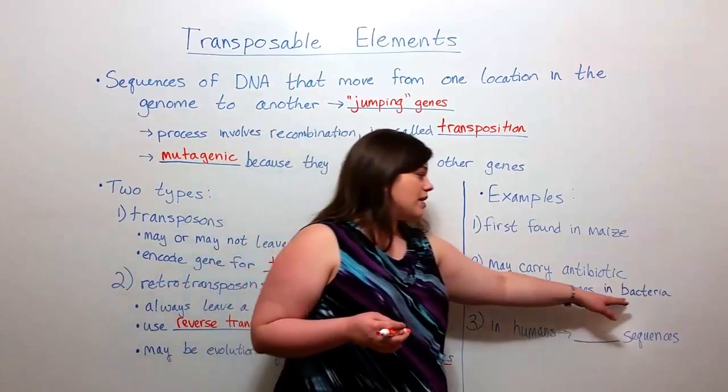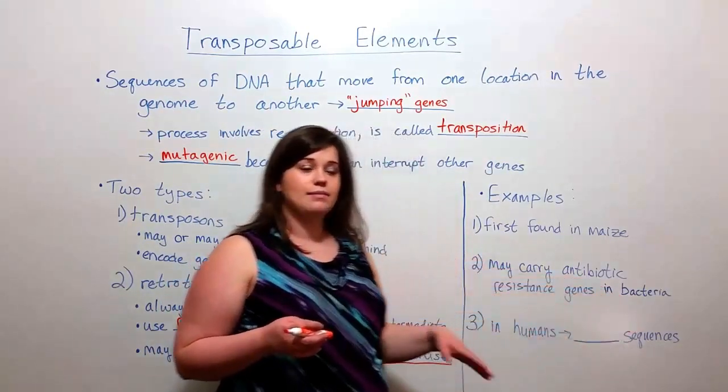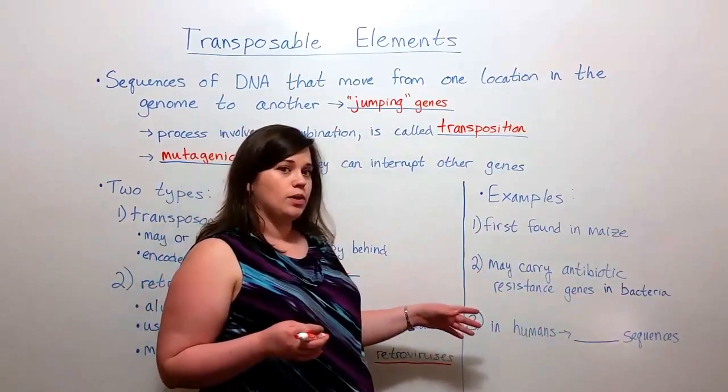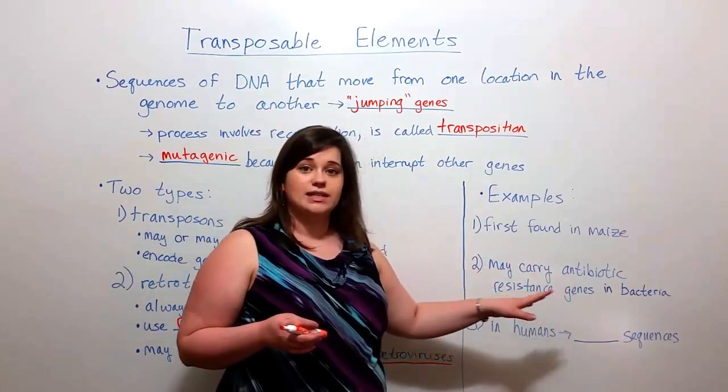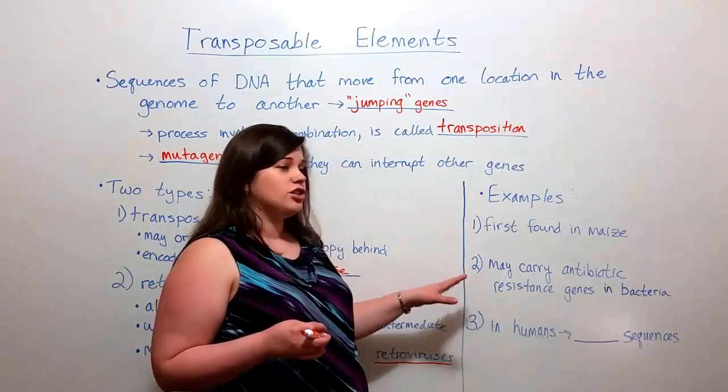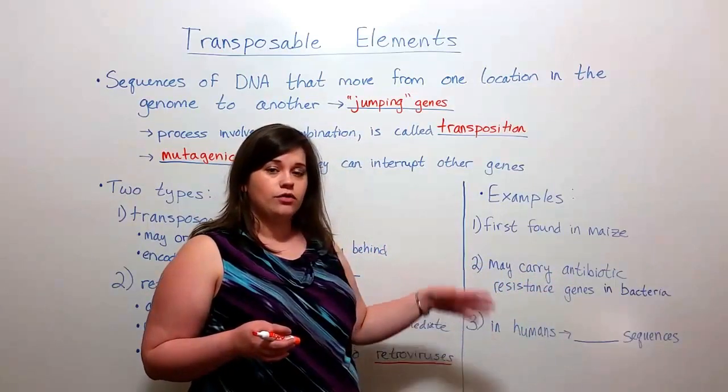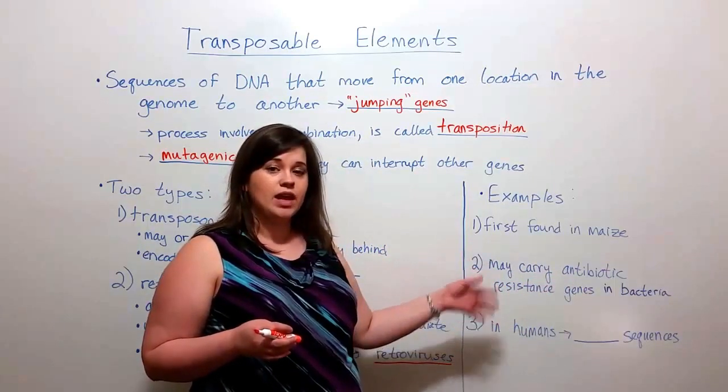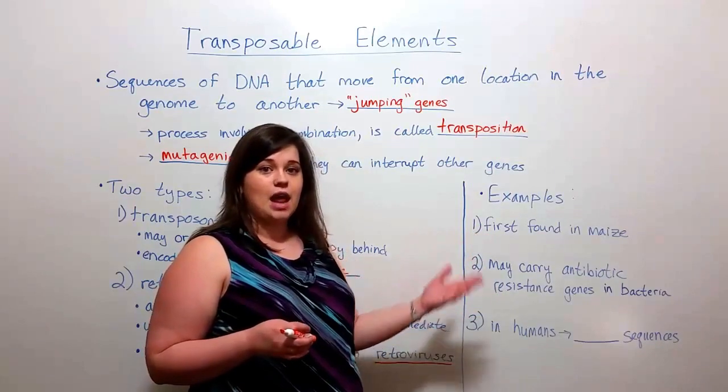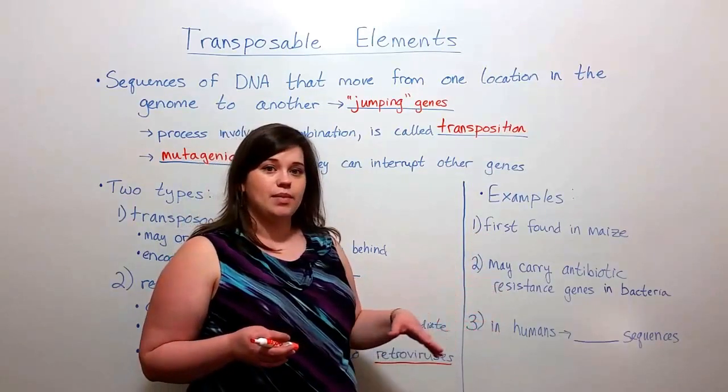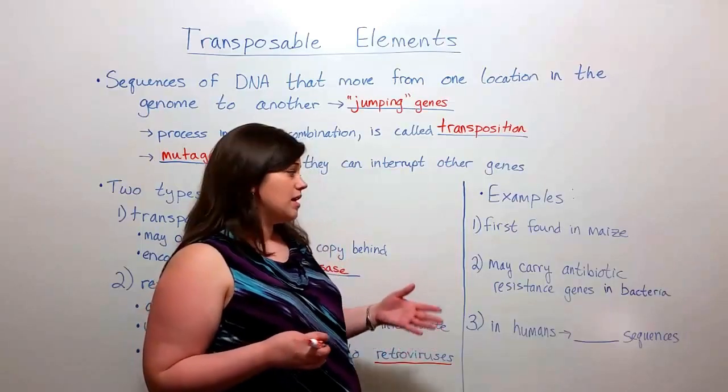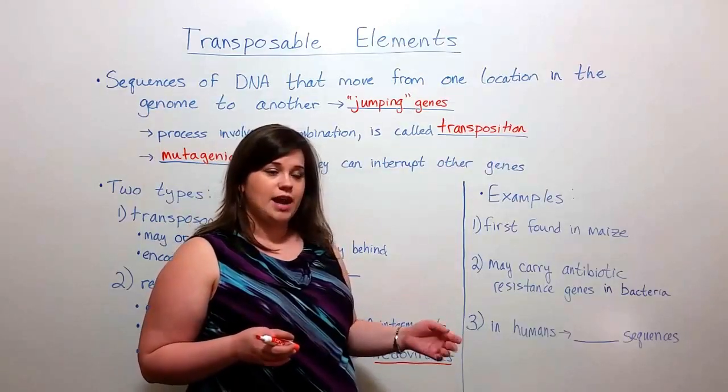Transposable elements have also been found in bacteria. And importantly, some transposable elements actually carry antibiotic resistance genes. And these genes can move back and forth from chromosomal DNA into plasmid DNA and back again, and can actually create some medically important antibiotic resistant bacteria.